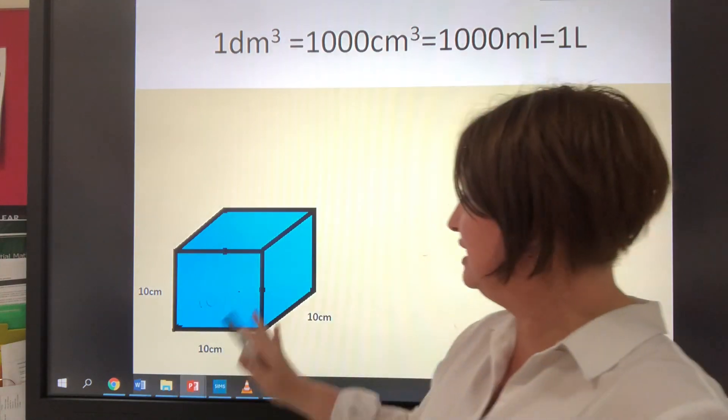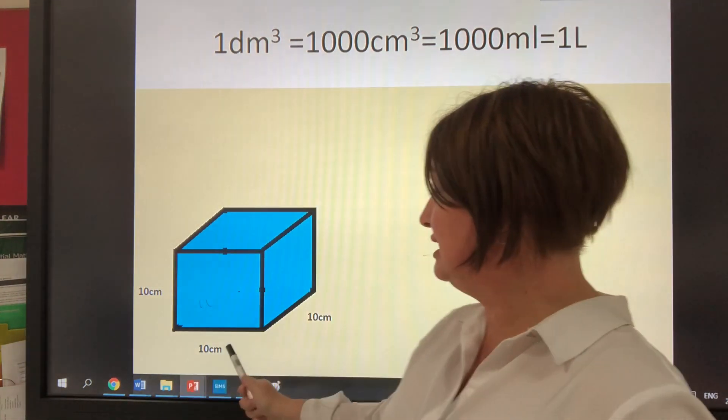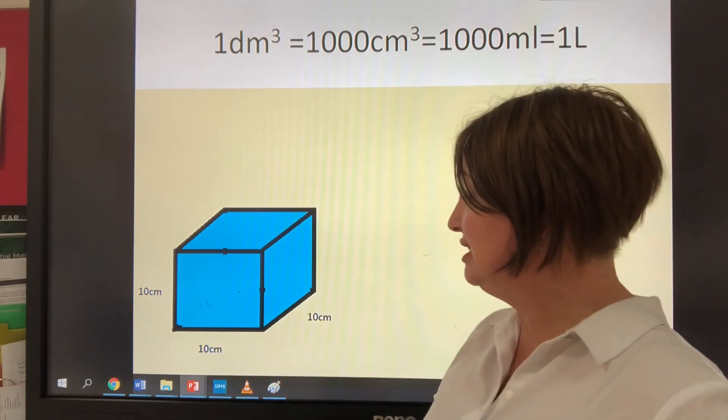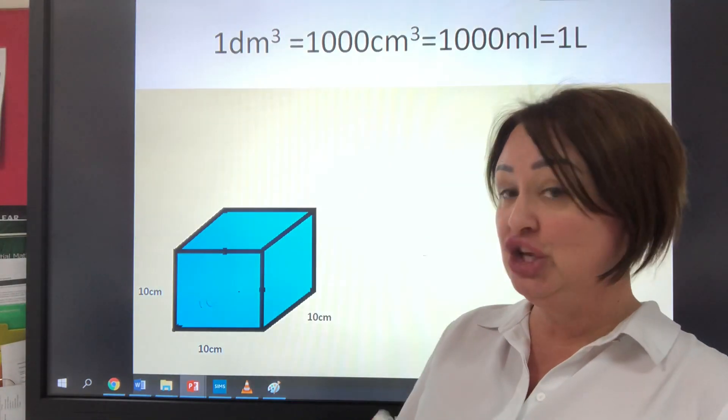First of all, let's have a look at this block here. This cube is 10 centimetres by 10 centimetres by 10 centimetres. So its volume is a thousand centimetres cubed.